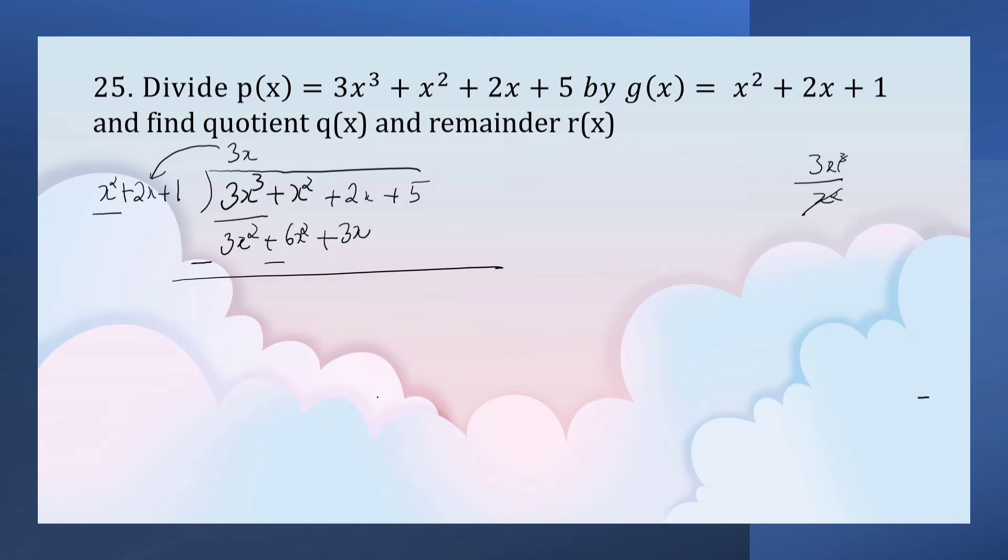Change the sign of the second row. 3x³ and 3x³ get cancelled. This gives negative 5x² minus x plus 5.